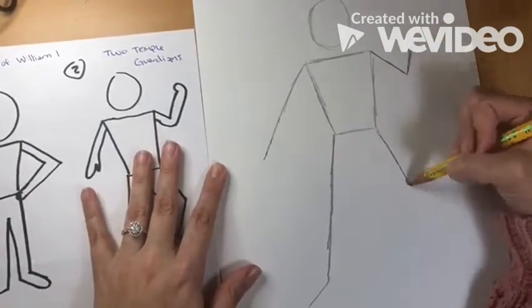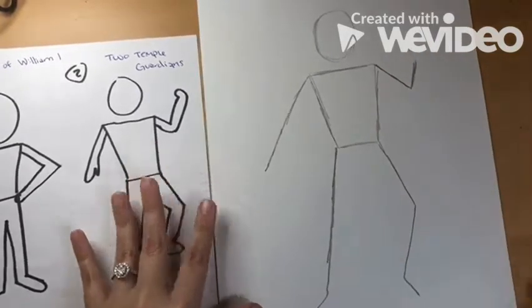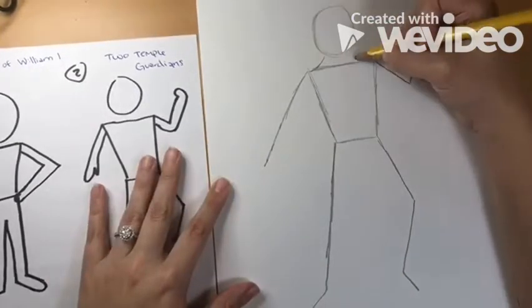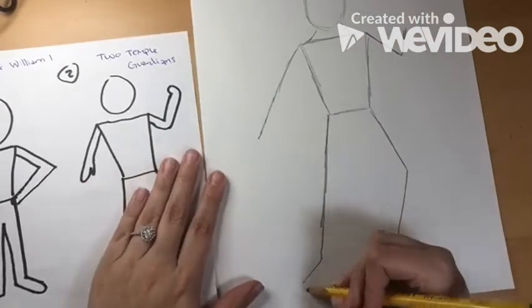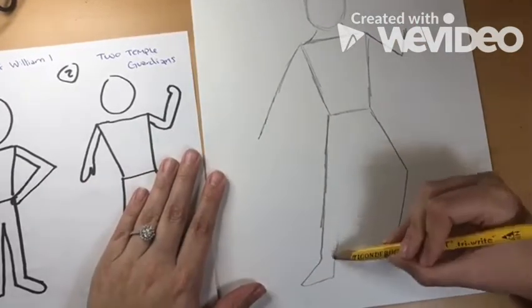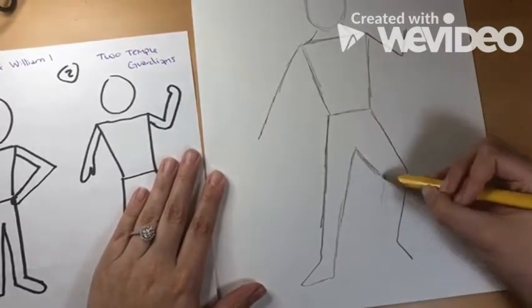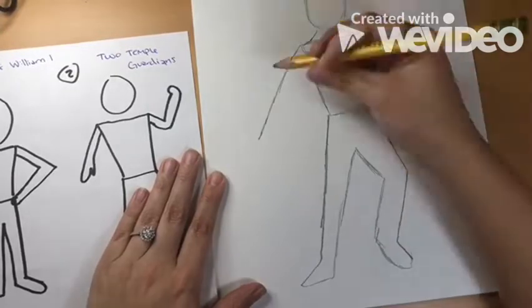The arms and legs can be tricky, so you can draw them as if you're drawing stick figures. We will then add more definition to those legs and arms. Now you see they are starting to look more like a human.